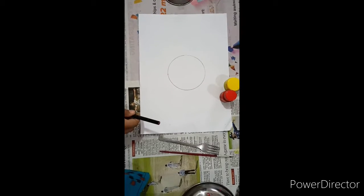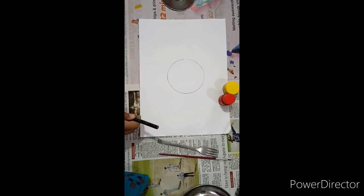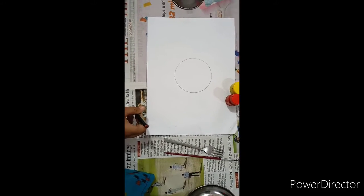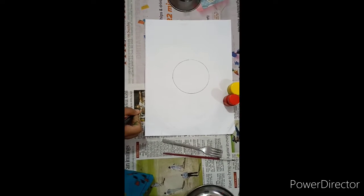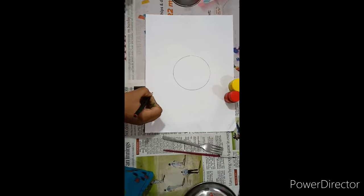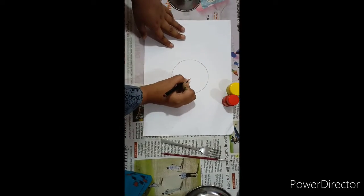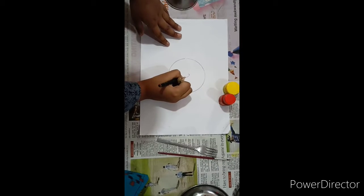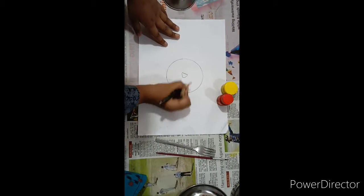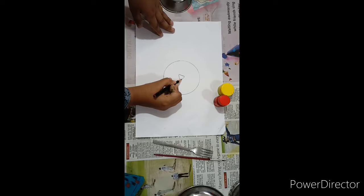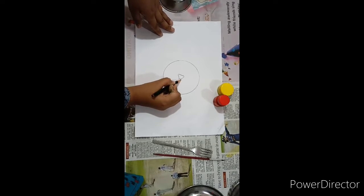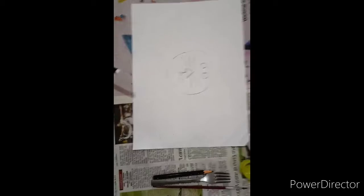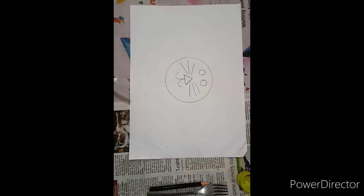Now we made a circle. Inside the circle, let's draw a lion face. Now let's highlight these.